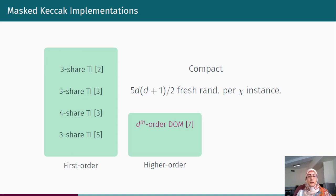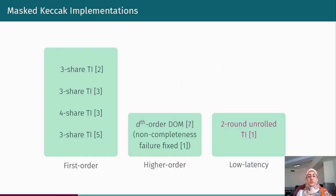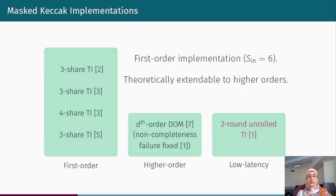We have dedicated low-latency implementations to the third group where there is only a two-round unrolled threshold implementation. This design successfully achieves half number of clock cycles while requiring six input shares at its first order. This is theoretically extendable to higher orders. However, in practice, it confronts significant challenges.